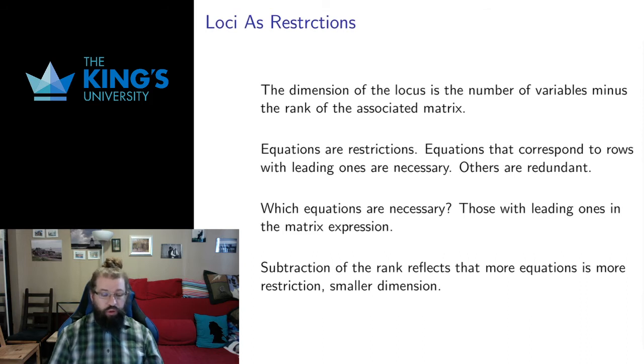Row reduction solves that for us. We change the equations to a matrix. Anything that leads to a row of all zeros was an equation that was redundant in the system. You can get rid of that equation entirely and have exactly the same solutions. The equations that are necessary are the ones with leading ones—the leading one tells us that equation actually does something, actually does imply a restriction.